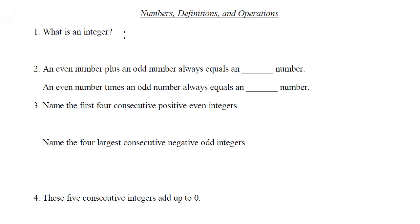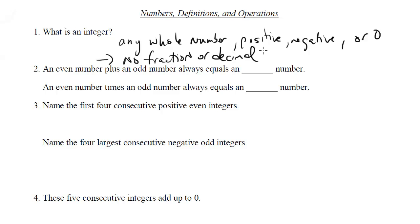So first, what is an integer? This is just a definition and something you need to know for the SAT. An integer is basically any whole number that is positive, negative, or zero. Basically you can't have a fraction or decimal. Any whole number, positive, negative, or zero works.